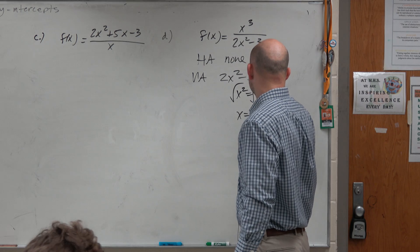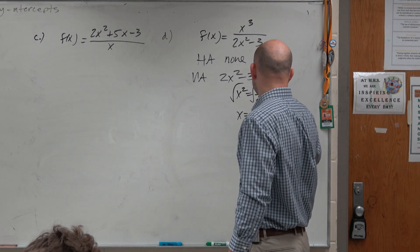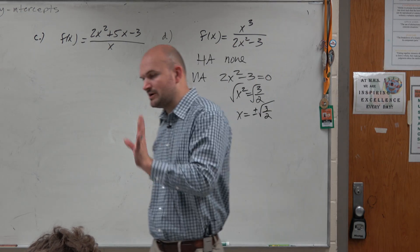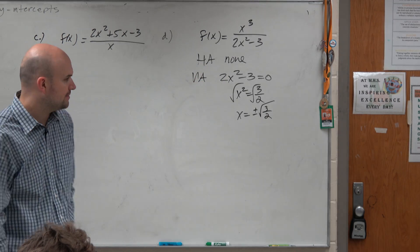I get x squared is equal to 3 halves. Square root, square root. x is equal to plus or minus the square root of 3 halves. So I'm not going to worry about rationalizing this denominator right now. We can just work from there.